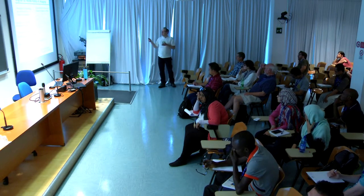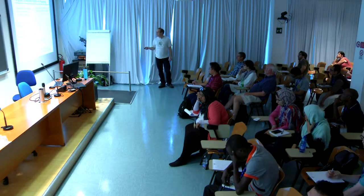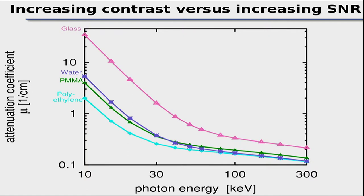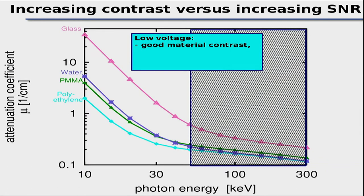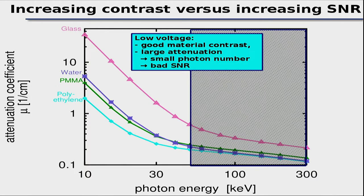When choosing acceleration voltage, there is a fundamental trade-off. At low photon energies, material contrast is high — the attenuation curves are well-separated — but overall attenuation is large, so few photons reach the detector and SNR is poor. At high energies, attenuation is low and photon count is high (good SNR), but the curves converge and contrast between materials decreases.